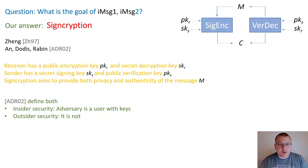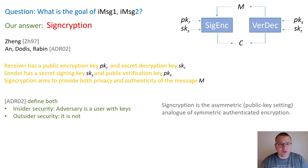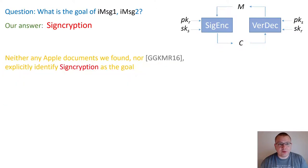An, Dodis, and Rabin defined two types of signcryption security. An adversary attacking the insider security is assumed to have its own pair of signcryption keys that belongs in the user network. An adversary attacking the outsider security does not possess its own key pair in the network. To summarize, signcryption can be thought of as the asymmetric analog of symmetric authenticated encryption. Interestingly, neither any Apple documents we found nor the 2016 attack paper explicitly identified signcryption as the goal.